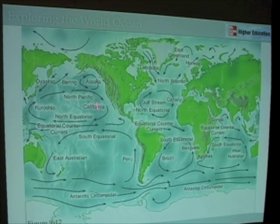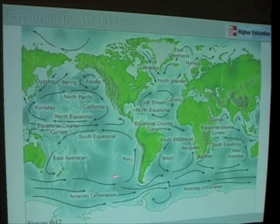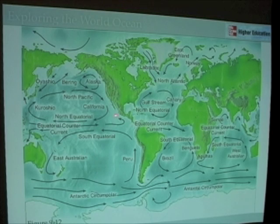You should be able to name the eastern boundary currents and the western boundary currents, and we'll talk in a little more detail about those. These are just general patterns for the circulation of the ocean. Equatorial currents running across the equator, north or south of the equator, may not always exactly run like that.